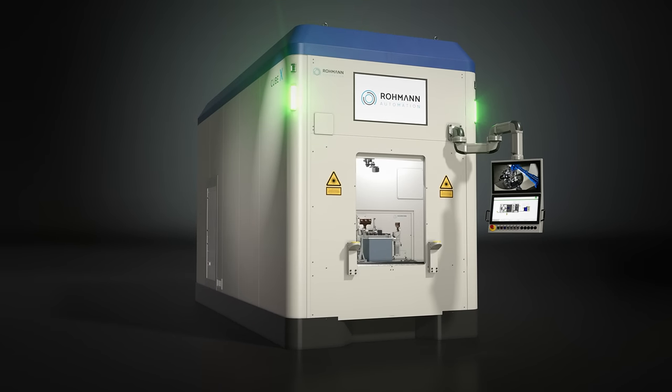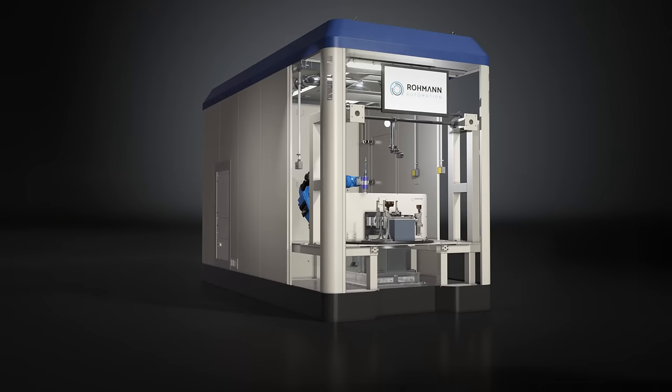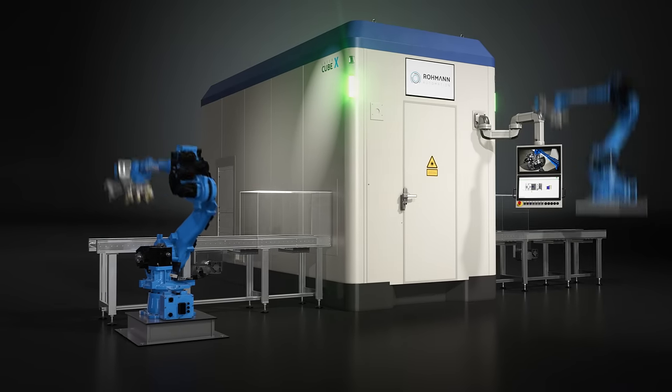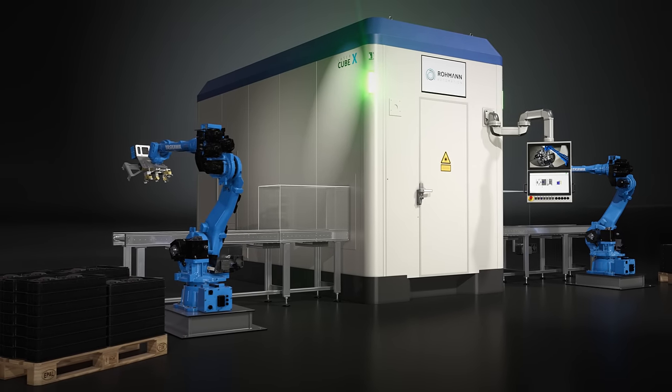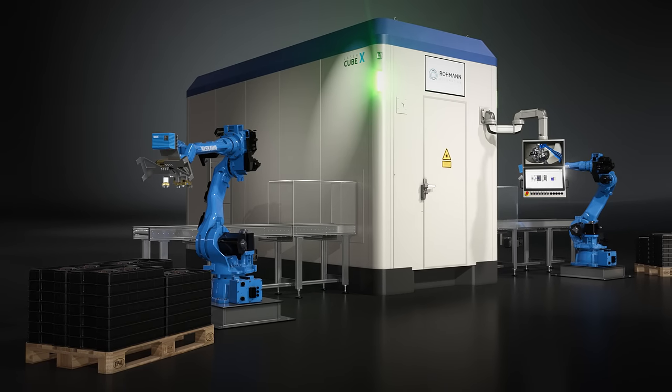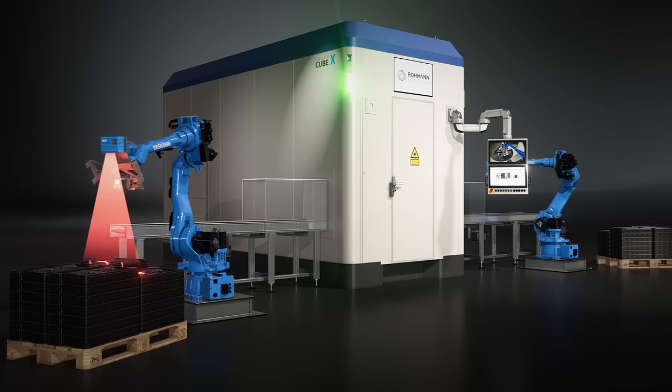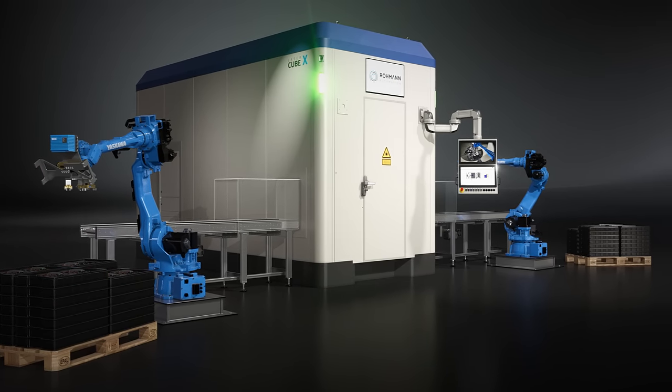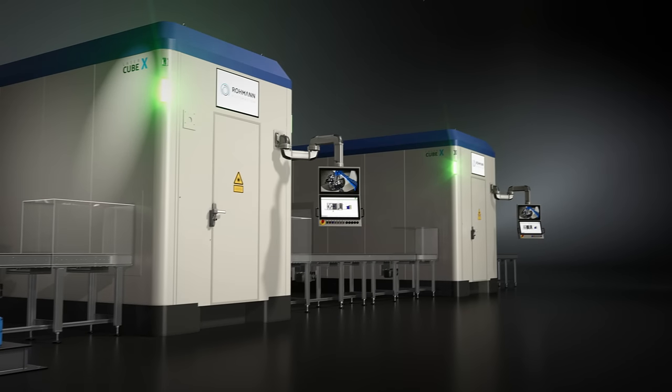On request, we can make your production even more efficient by means of a workpiece transfer system and any six-axis industrial robot. Even if you want to subsequently adapt your production through changed production processes, we can implement this for you.